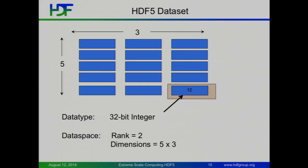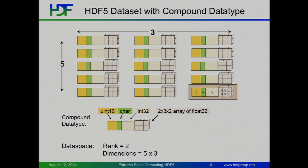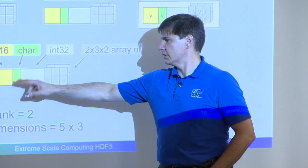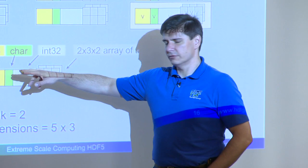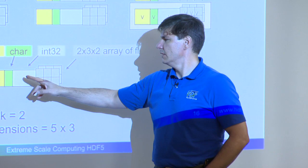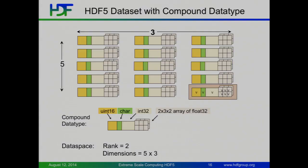Back on the dataset — we have a two-dimensional dataset that's three by five. It's got a 32-bit integer as a data type, and in one of those cells, the value is 12. High level, this is what an HDF5 dataset is. A more complicated compound data type — we've got four fields in the compound type: a 16-bit unsigned integer, a character, a 30-bit integer, and an array data type — in this case, two by three by two of some floats. The whole array is templated out with that data type.